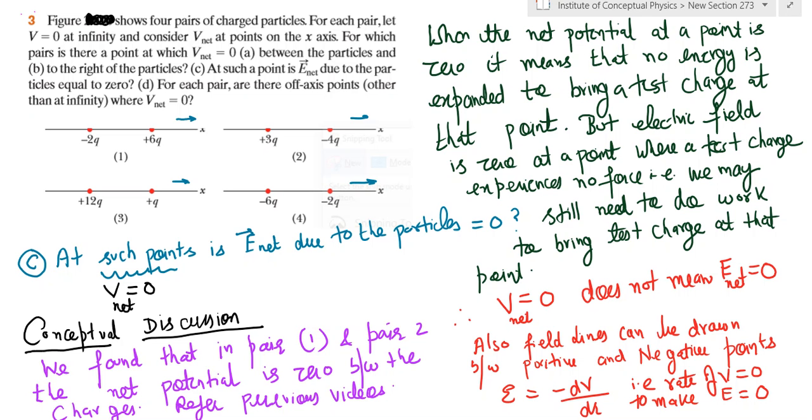Now let's do this as a conceptual discussion. See, the concept of V_net equals zero implies that if you bring a test charge to that point, you don't have to expend any energy. That means there is no expenditure of energy if the potential at that point is zero. So you don't need to spend any joules to bring a test charge to a point where potential is zero.